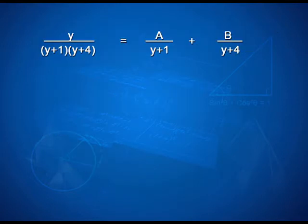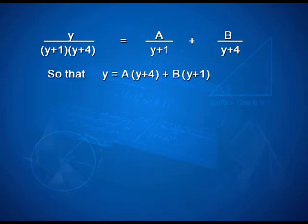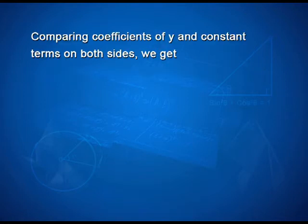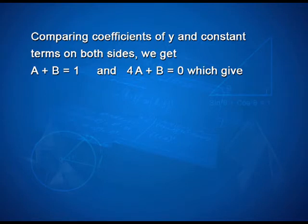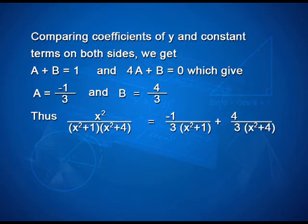Therefore, y/((y+1)(y+4)) can be expressed as A/(y+1) + B/(y+4), so that y = A(y+4) + B(y+1). Comparing coefficients of y and constant terms, we get A + B = 1 and 4A + B = 0, which gives A = -1/3 and B = 4/3. Thus, x²/((x²+1)(x²+4)) = -1/3 · 1/(x²+1) + 4/3 · 1/(x²+4).